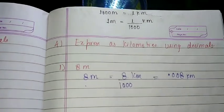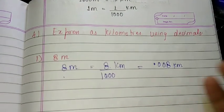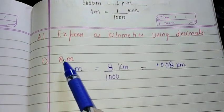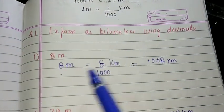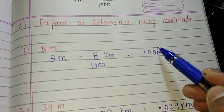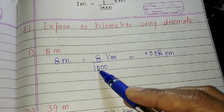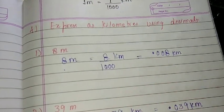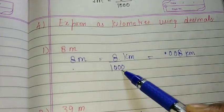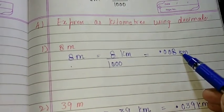Question number 4: express as kilometer using decimals. If we want to convert meter into kilometer, we divide that particular term with 1000. So 8 meter — if we want to convert into kilometer, we divide with 1000. Upside only one digit is there, so if downside is 3 zeros, upside we have to make 3 digits. Before that 3 digits I put the point. So 8 over 1000: 8, 0, 0 — 8 meter is equal to 0.008 kilometer.